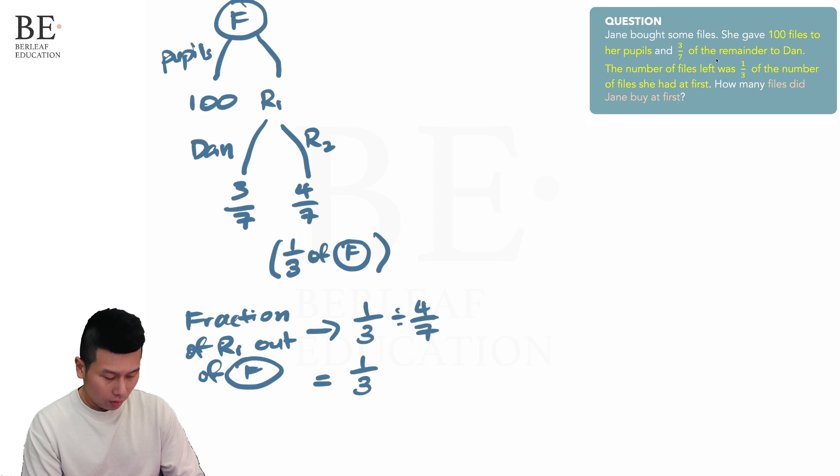Now knowing that 7 over 12 is actually R sub 1 out of the total files, we can then determine the fraction of the pupils, which is one whole minus 7 over 12, which equals 5 over 12.